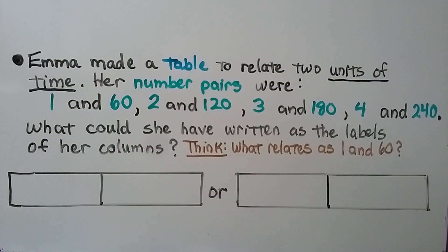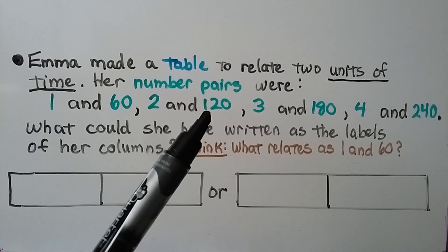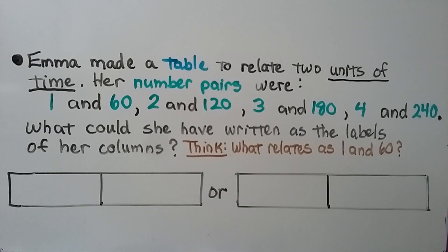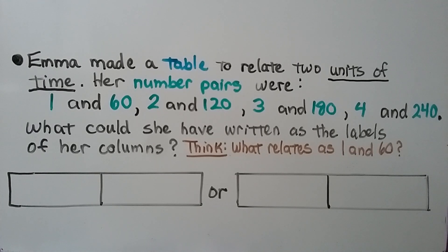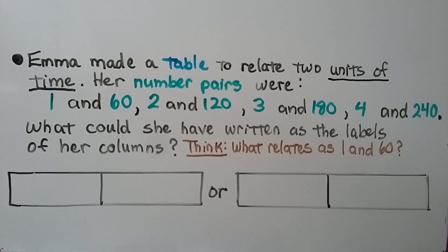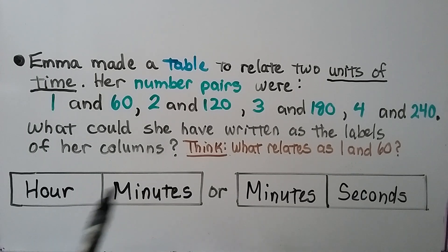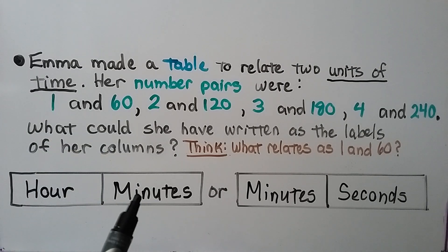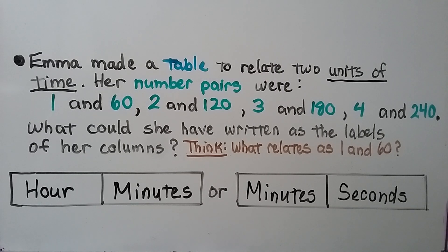Emma made a table to relate two units of time. Her number pairs were 1 and 60, 2 and 120, 3 and 180, and 4 and 240. She could have written hours and minutes as her column labels, or minutes and seconds, because 1 hour equals 60 minutes and 1 minute equals 60 seconds — either one works.